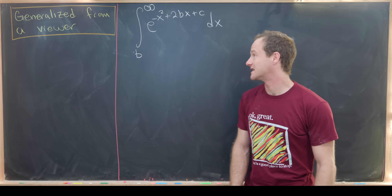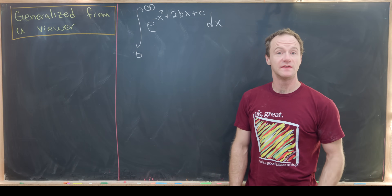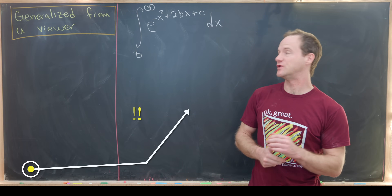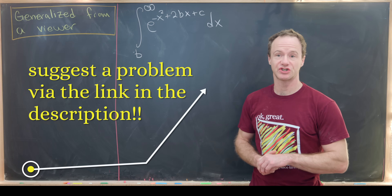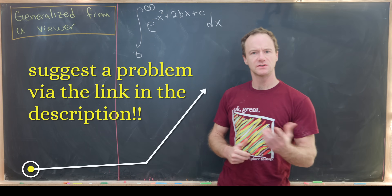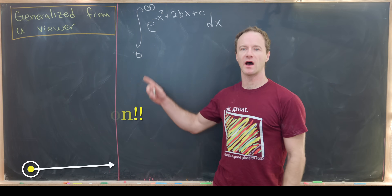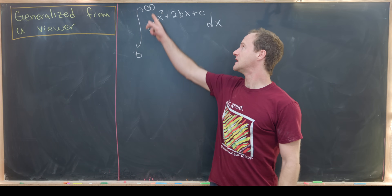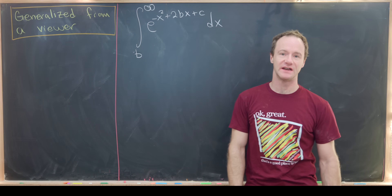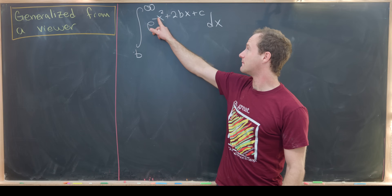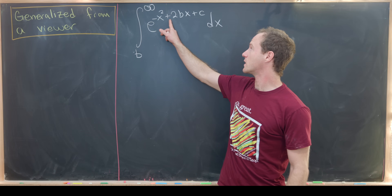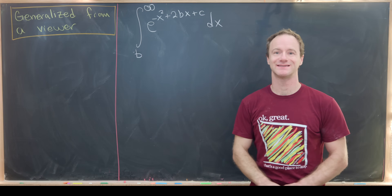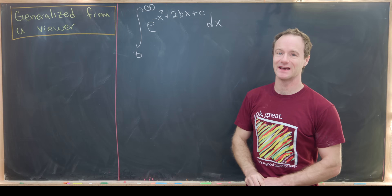Here I've got this nice integral that was generalized from a viewer suggestion. We have the integral from b to infinity of e to the minus x squared plus 2bx plus c dx.